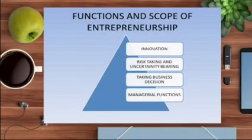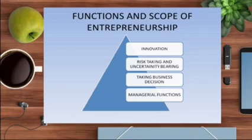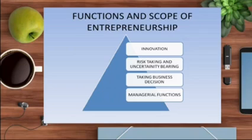Next, we are going to see the functions and scope of entrepreneurship. The main function of entrepreneurship is innovation. A person who has innovative characteristics and thinks outside the box is called an entrepreneur. He is also a person ready to take risk and bear uncertainty. Becoming an entrepreneur is not easy — it is risky. But the person who is able to take the risk and bear the uncertainty is called an entrepreneur, and that includes making quick decisions at the right time.